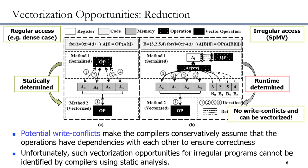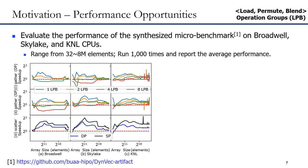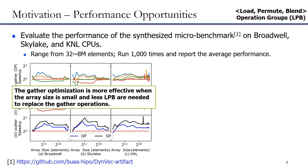To show the performance opportunity with gather optimization quantitatively, we evaluate performance of synthesized micro-benchmarks on Broadwell, Skylake, and KNL platforms. We observe that replacing the gather operation with load-permute-planned operation groups achieves better performance in several cases. While the performance improvement using gather optimization varies across different array sizes, it is more effective when the array size is small and fewer LPP operations are needed to replace the gather operations. If the sparsity of the data is entirely random, there is hardly a chance of achieving better performance.